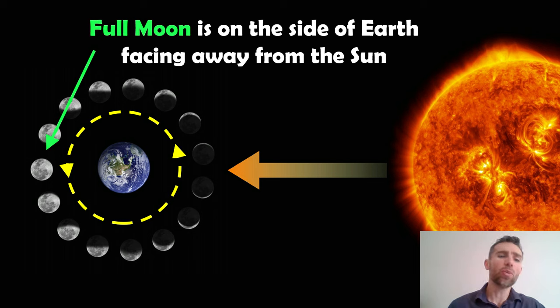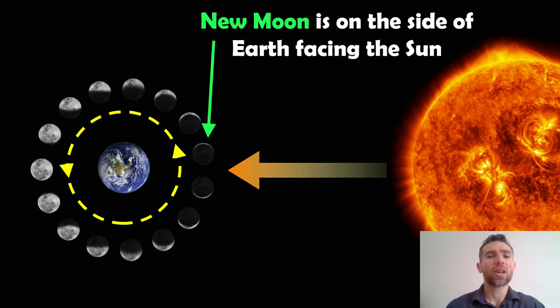Now, the full Moon will always be on this side of Earth facing away from the Sun. So, if we were to look at the Sun-Earth system here, the Moon would always be on the opposite side of Earth compared to the Sun. Because it's fully illuminated, that's the face that's facing towards us. So, we basically see that as a full Moon. And that's on the opposite side of Earth. The new Moon is when it's basically directly between the Earth and the Sun.